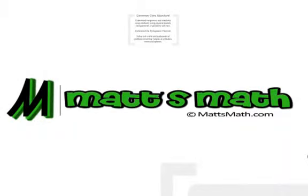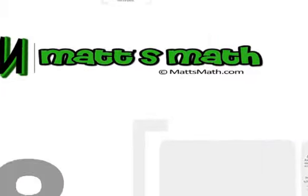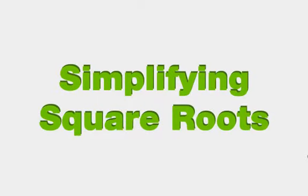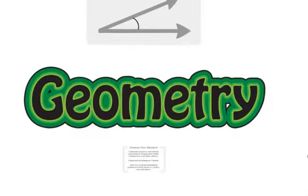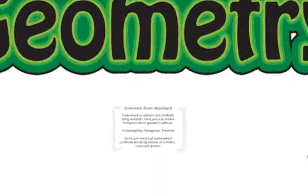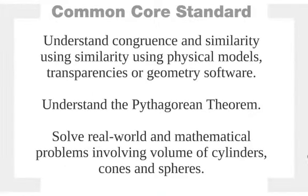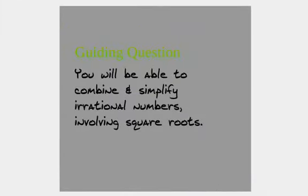Well, hey everybody. This is Matt with MathsMath.com. Thanks for joining us here today as we talk about how to simplify square roots. We are in the Math Common Core Standard of Geometry, and we are going to be looking at and understanding the Pythagorean Theorem and how square root numbers really help us with the Pythagorean Theorem, as well as when we look at cones and spheres and cylinders. We're going to be using square roots of numbers occasionally with that as well. So we have to figure out how to simplify and combine irrational numbers like square roots when we're dealing with those kind of concepts.